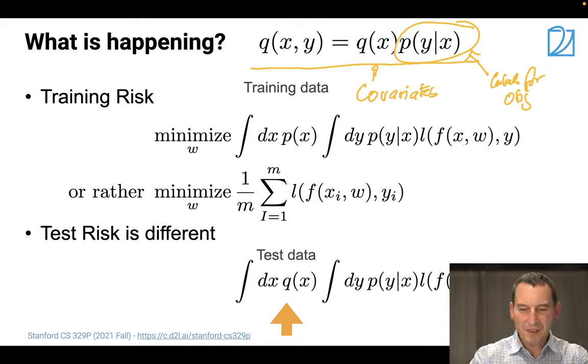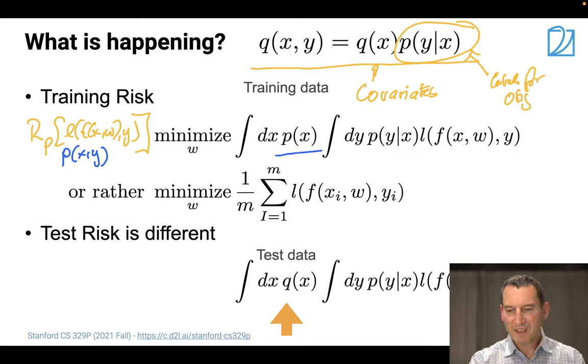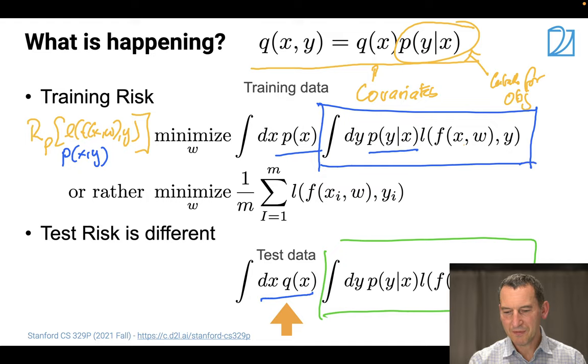So what that means is that if I have a certain covariate, then the label distribution ought to be the same on training and test. But the distribution of covariates may be quite different. Okay. So if I want to minimize the risk, so that would be basically the risk under p of the loss of f(x,w,y). That's what you want to minimize, right? So I can write this out as an integral. This has a term p(x,y) in it. And I can split it up into p(x) and into p(y|x). And the thing is that the second term remains unchanged. And the first term needs to be changed, right?